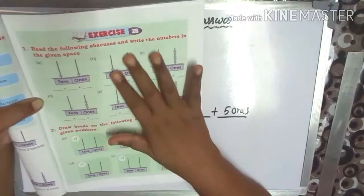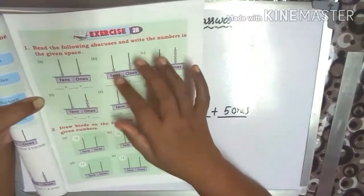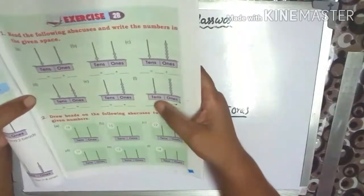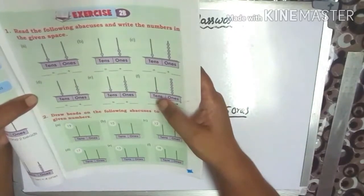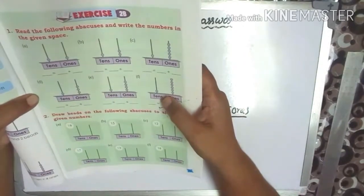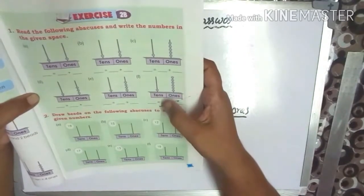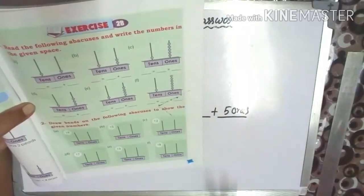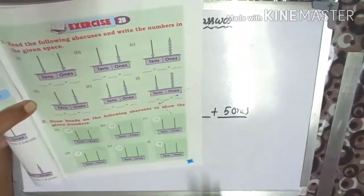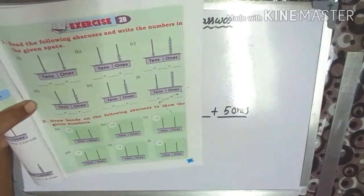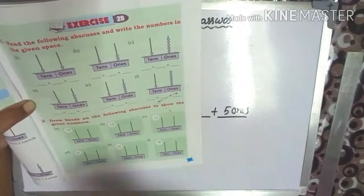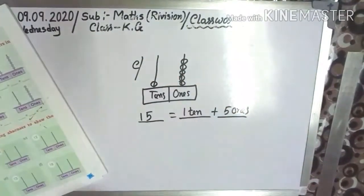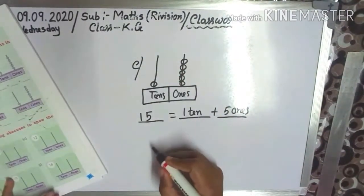So practice is very important. Question 2, number 2: Draw bits on the following abacuses to show the given numbers. Follow me, children.